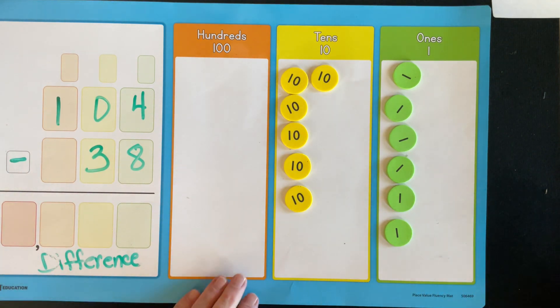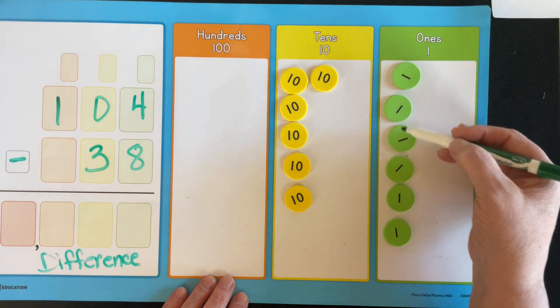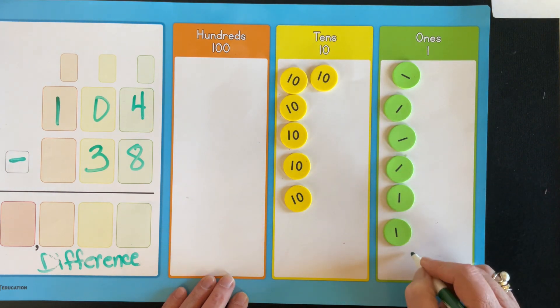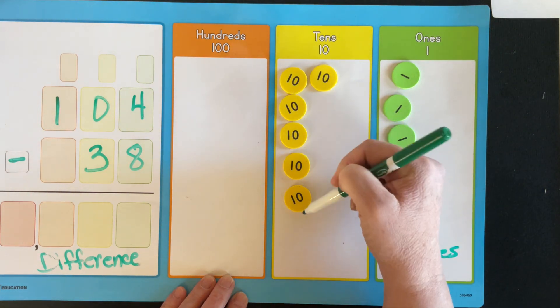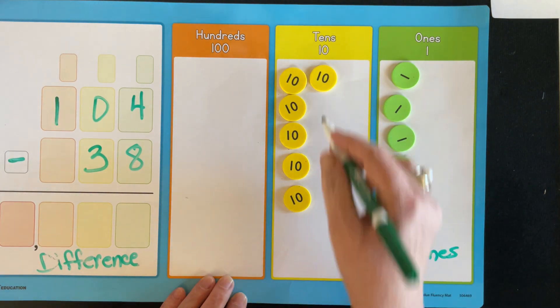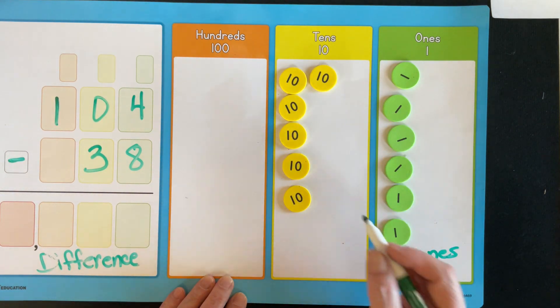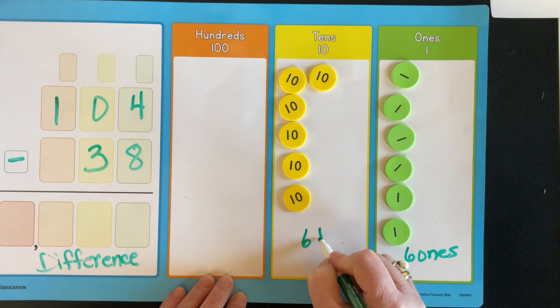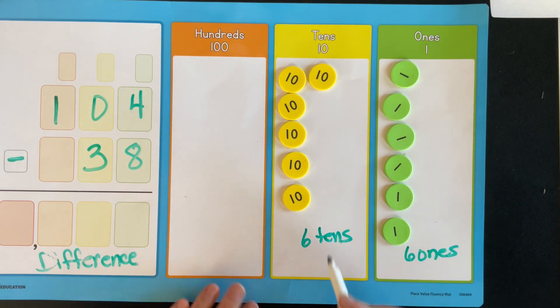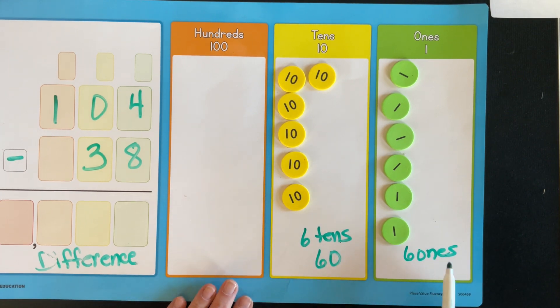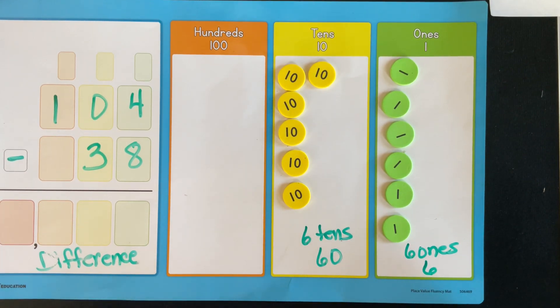So what do we have left? We have one, two, three, four, five, six ones. And we have one, two, five, six. So six is really just one more 10 than five 10s. So six 10s. How do you write six 10s as a standard number? 60. How do you write six ones as a standard number? Six. So 60 plus six is 66.